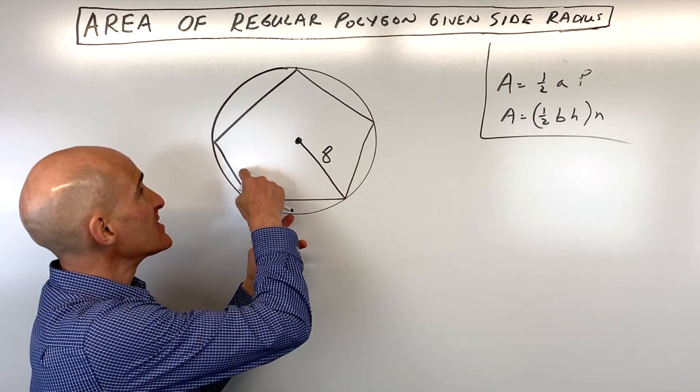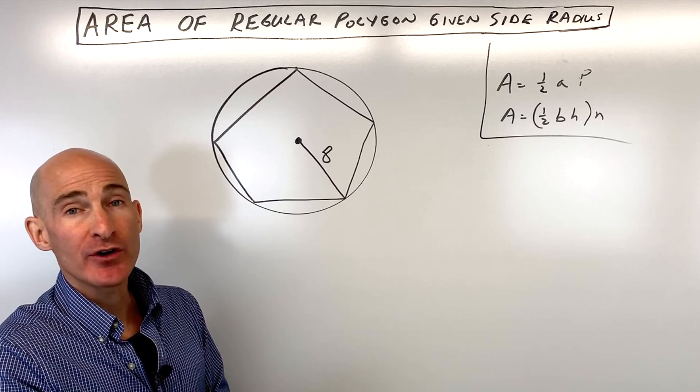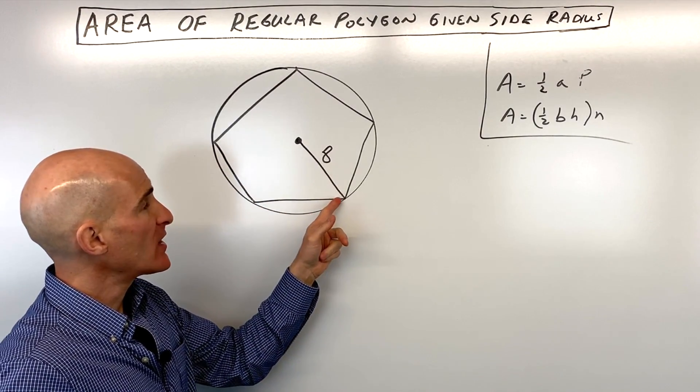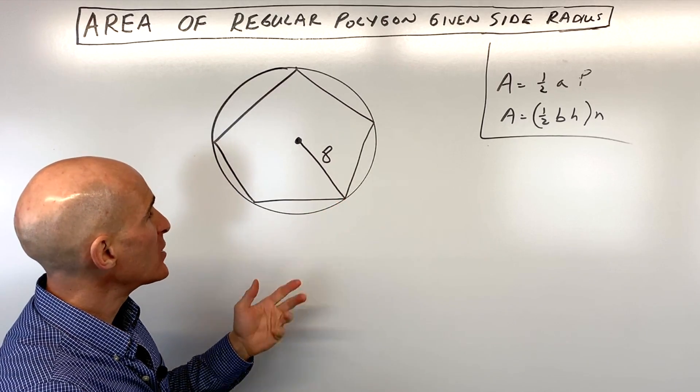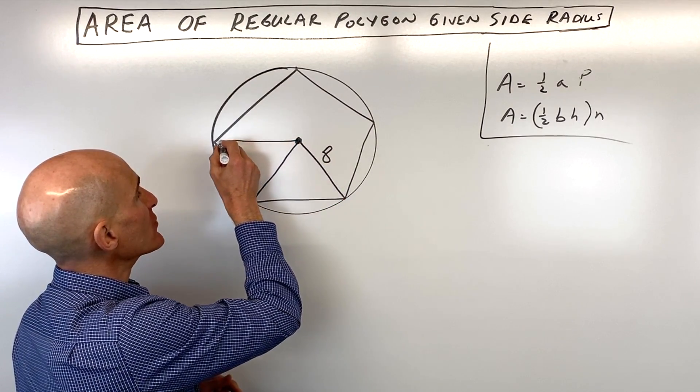How do we find the area of this inscribed pentagon inside of this circle here? Well, we know it's a regular pentagon, and they're giving us the radius as 8 units, but what we want to do is we want to divide this up into congruent triangles. So let's do that first.